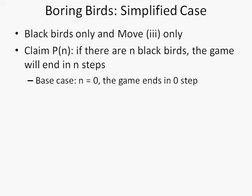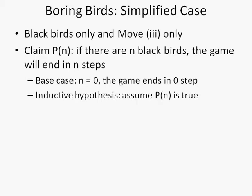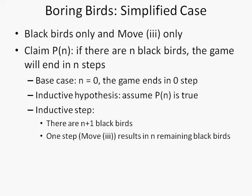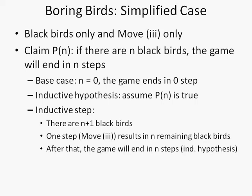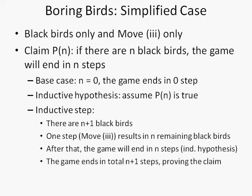The base case is n equals 0 and the game ends in 0 steps. The inductive hypothesis is we assume that Pn is true. The inductive step: there are n plus 1 black birds, and one step — move 3 — will result in n remaining black birds. By the inductive hypothesis, the game will end in n steps after that. So the game ends in n plus 1 total steps, proving the claim.